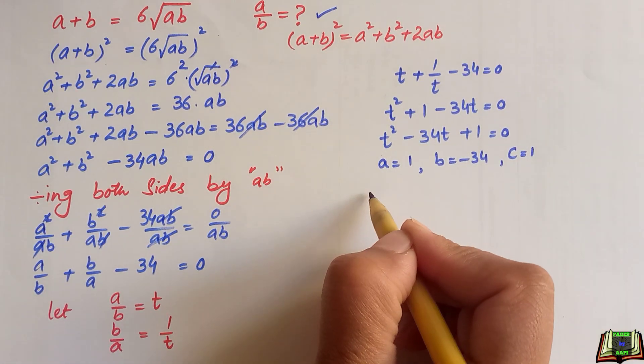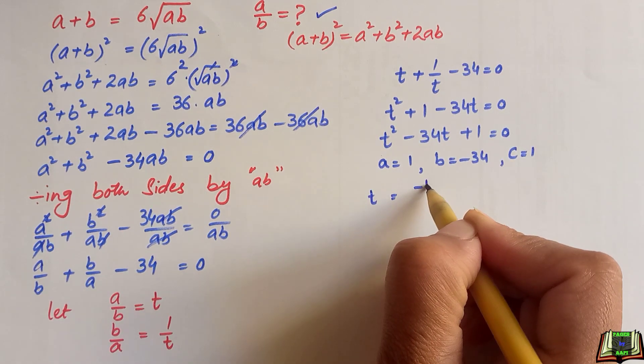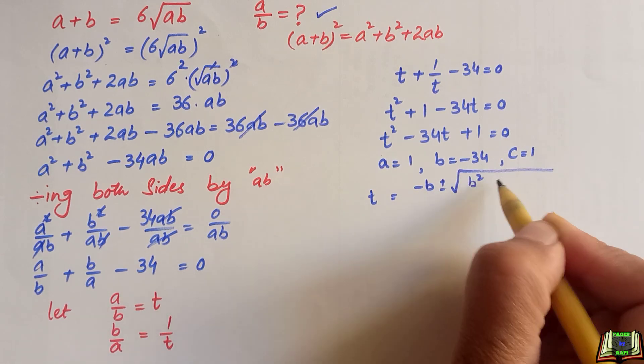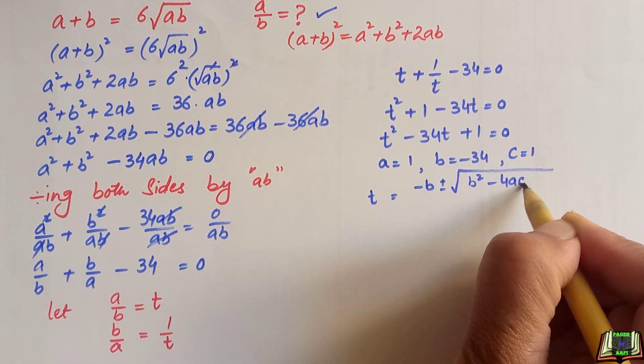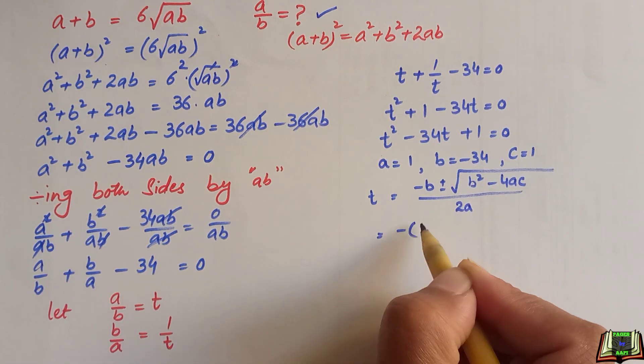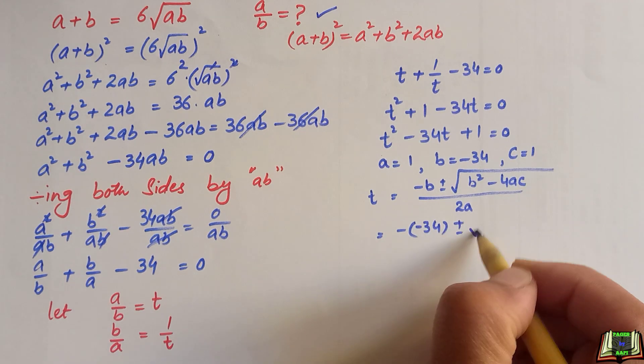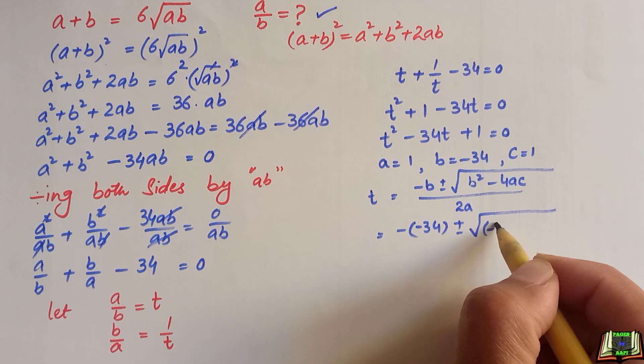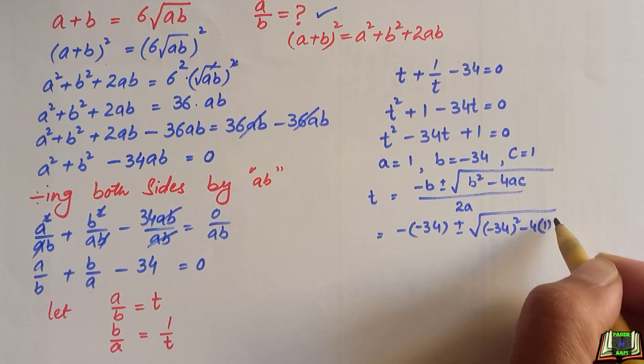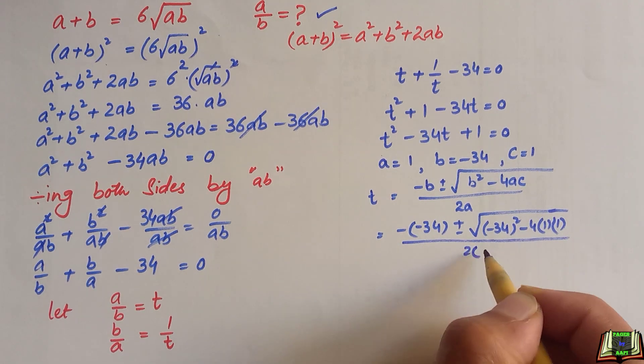We are going to use the quadratic formula to find the value of t. The quadratic formula is minus b plus minus root b square minus 4ac over 2a. Now, we are going to put the value of abc in this equation: minus into minus 34, root minus 34 whole square minus 4 times 1 times 1 over 2 times 1.